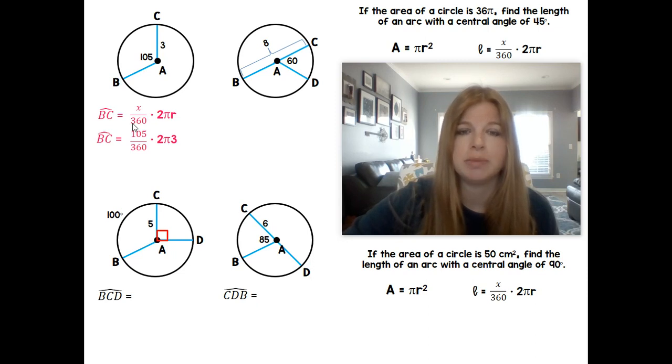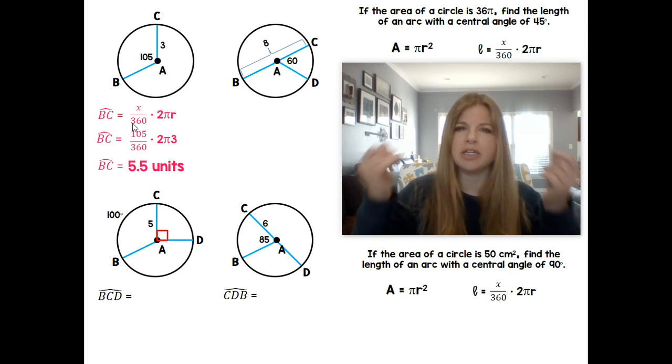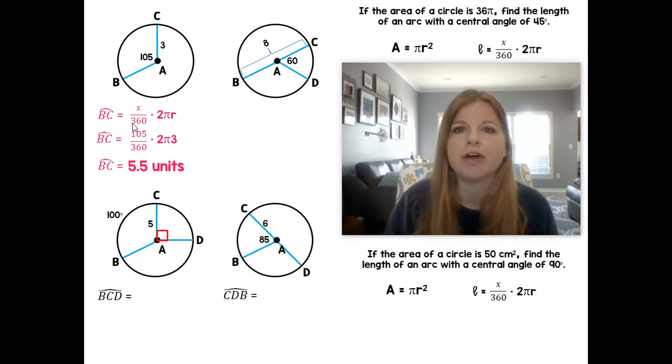My x here is 105, my r is 3. So 105 over 360 times 2π times 3. Round it to the nearest hundredth place, you should be getting in your calculator, when I rounded it's to the hundredth place with still 5.5, or you can write 5.50.